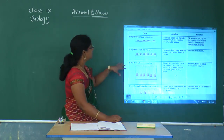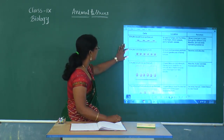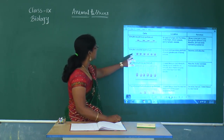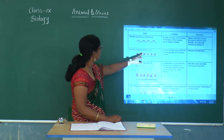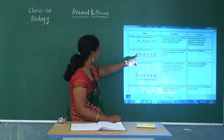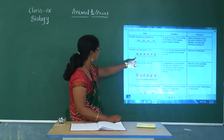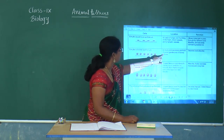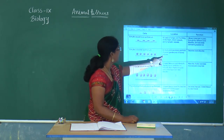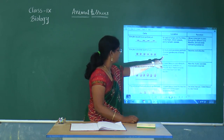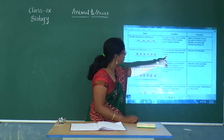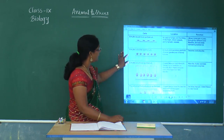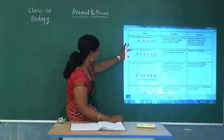We observe the permanent slide of cuboidal epithelium collected from the school laboratory. The cells appear like cubes — that is why it is called cuboidal epithelium. It is present in ducts and secretory portions of small glands and in the kidney tubules. Its main function is to secrete and absorb, and it also provides mechanical support.